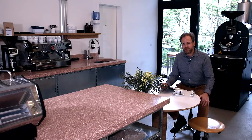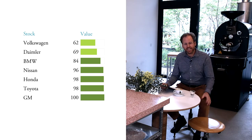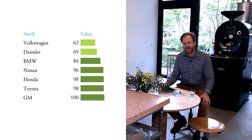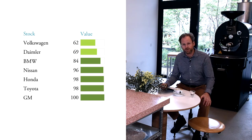Let's look at another set of companies we know very well — cars. I have listed here the Obermott value ranks for a selected number of international well-known car companies. Volkswagen has a value rank of 62, meaning its share price is the highest compared to its size, followed by Daimler and BMW. Really cheap companies are Nissan, Honda, Toyota, and General Motors — they all have very high value ranks.